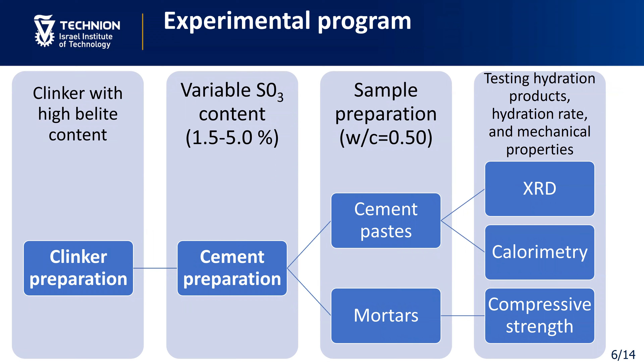The experimental program contains four main parts: first, clinker preparation with high-belite content; second, cement preparation with variable sulfate content, which varies from 1.5% to 5% sulfates by mass of cement; third, sample preparation with cement paste and mortars at a water-cement ratio of 0.5; and fourth, testing hydration products by X-ray diffraction, hydration rate by calorimetry, and mechanical properties by standard compressive strength test.